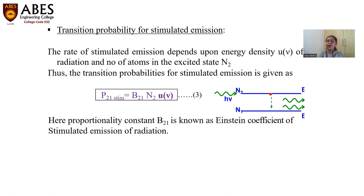U-nu is the energy density of the incident photon incident on the upper level E2, and B21 is the Einstein coefficient of stimulated emission of radiation.